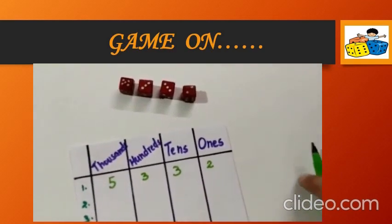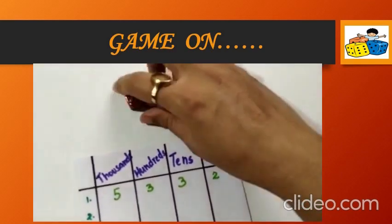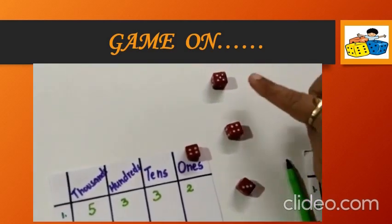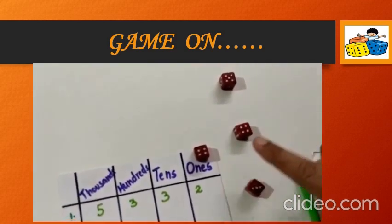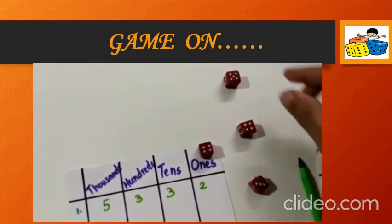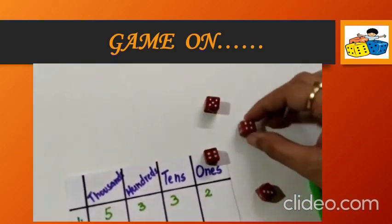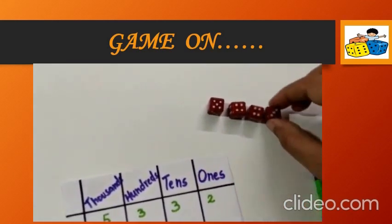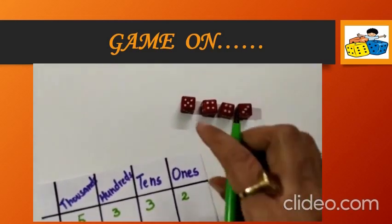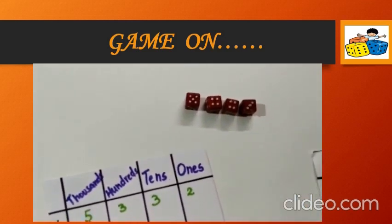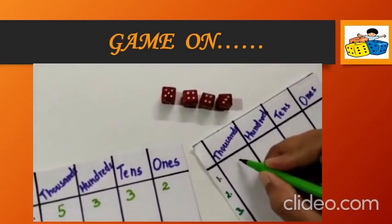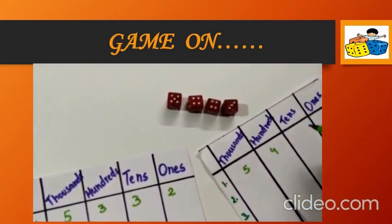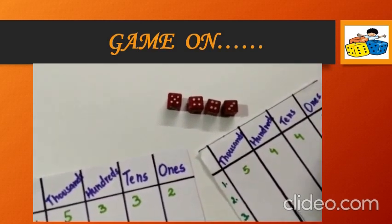Now, what is the next step? Again, your partner will roll these dice. Say he rolled the dice and he got 5, 4, 4 and 3. Again, arrange these numbers in the descending order means starting from bigger to smaller. Now, 5, 4, 4, 3. He will write down this in his place value chart. That is 5,443.